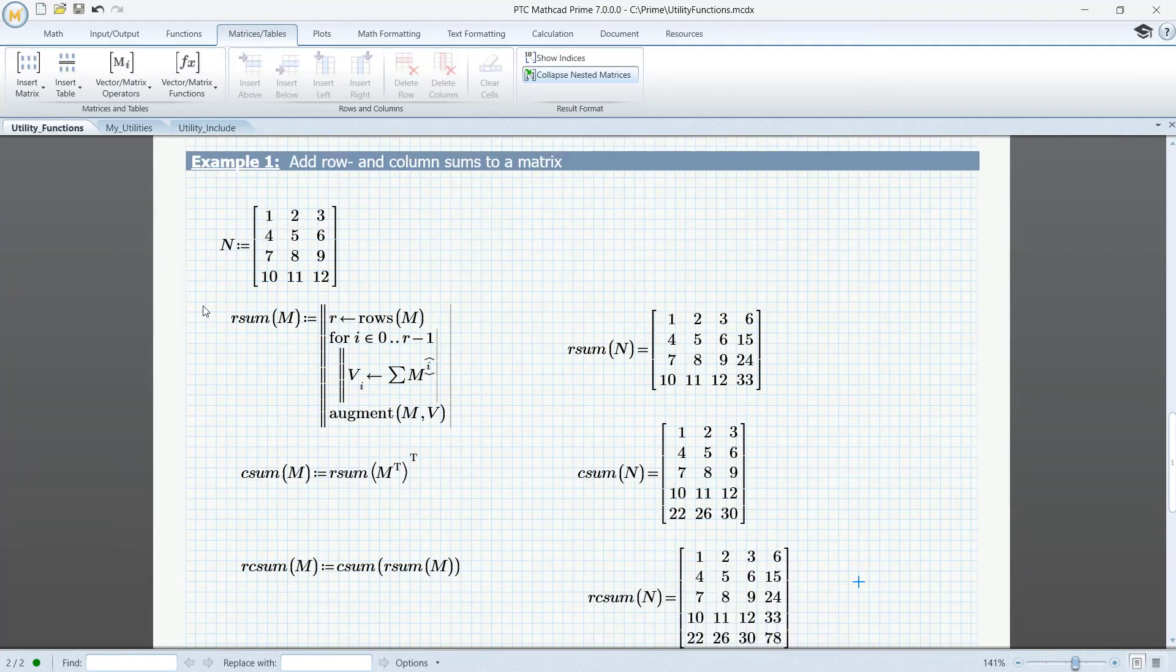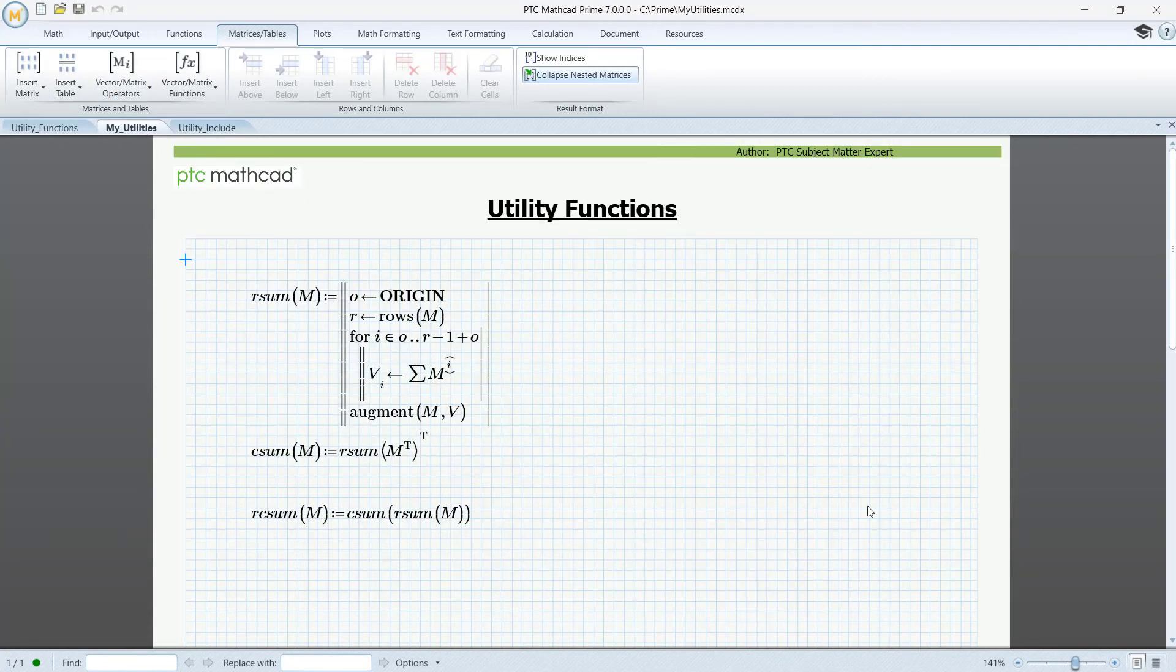Now, let's take these three functions and save them in a special file and call this file, for instance, my utilities. I have done that here. Note, however, that I have changed the first program a bit to make it independent of the choice of origin.